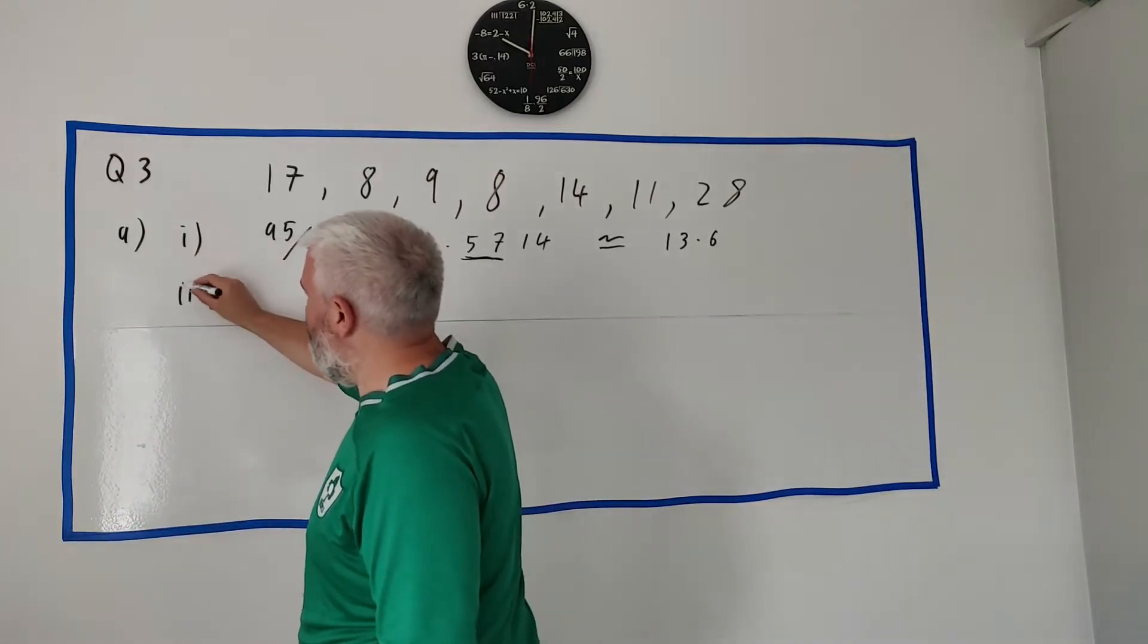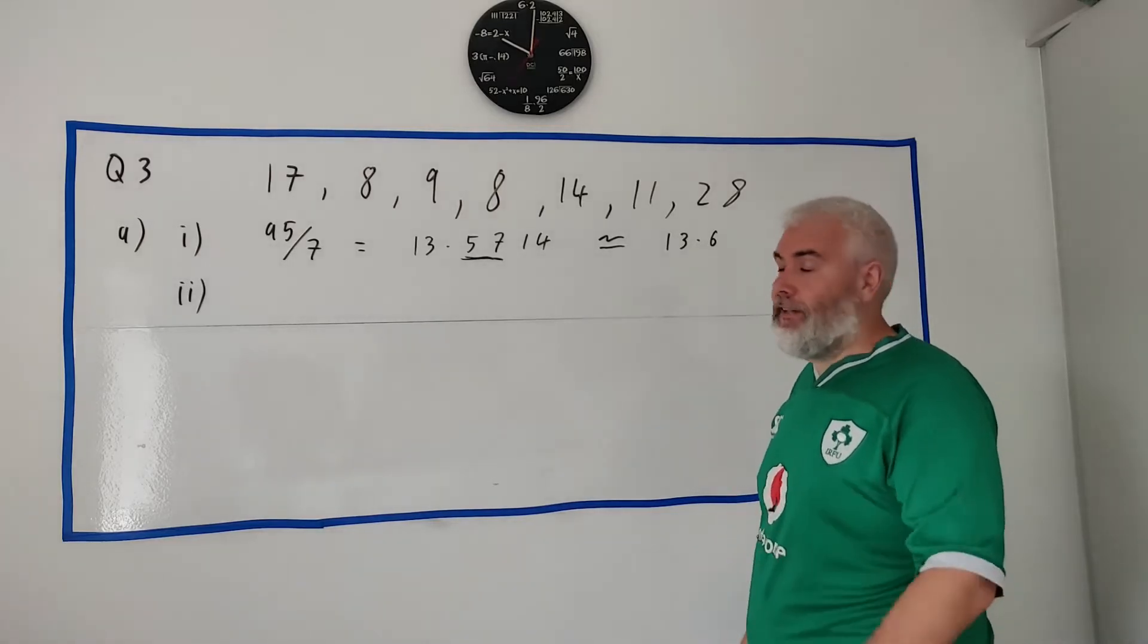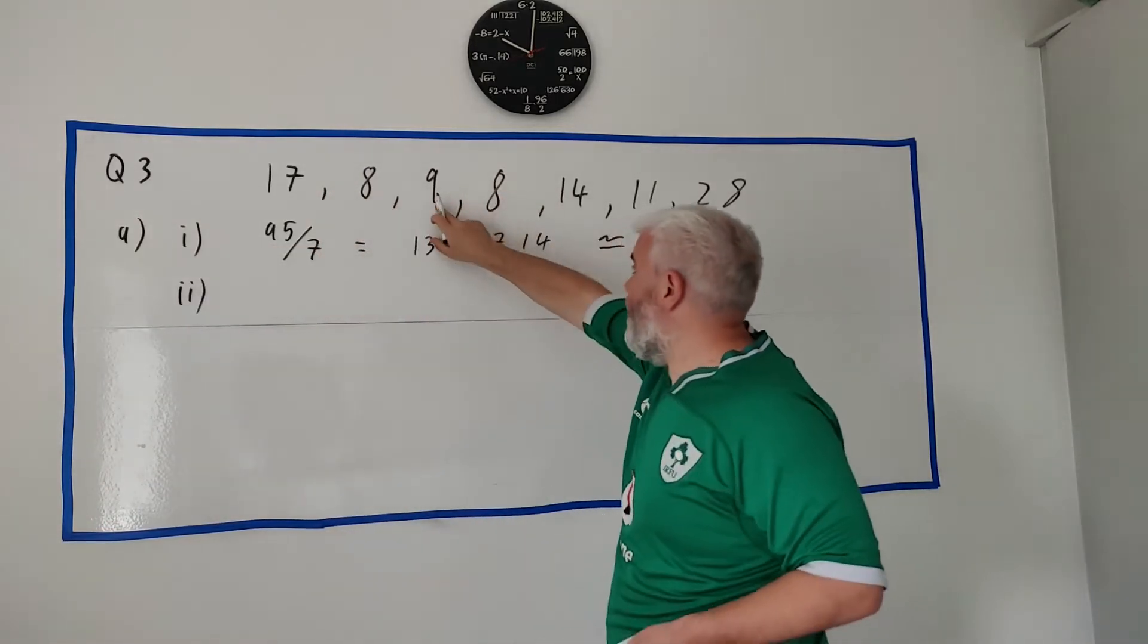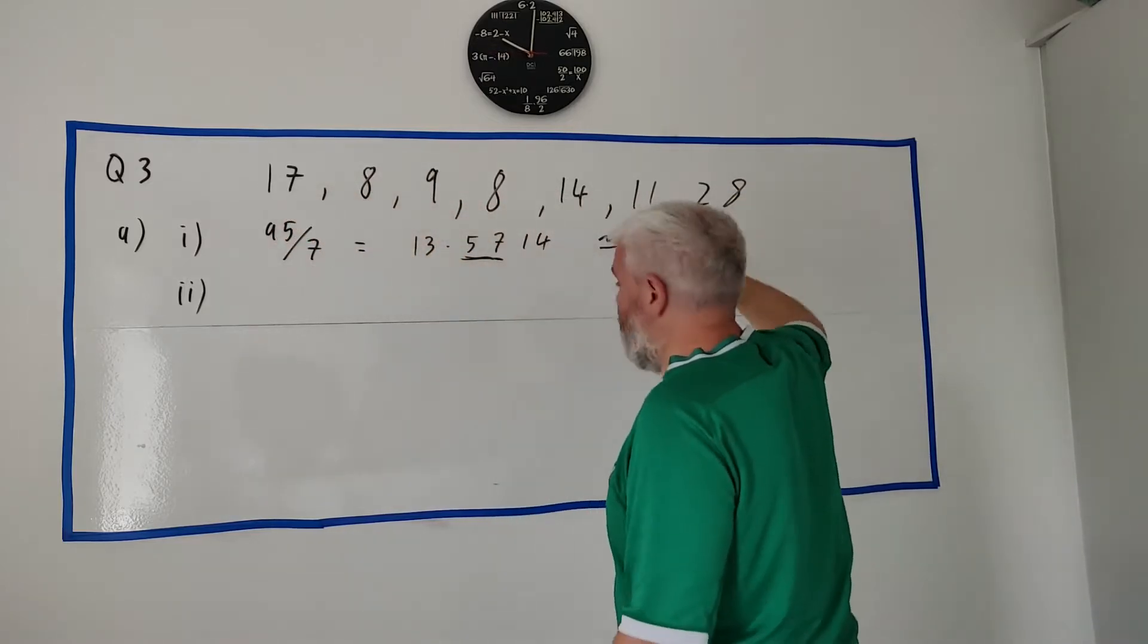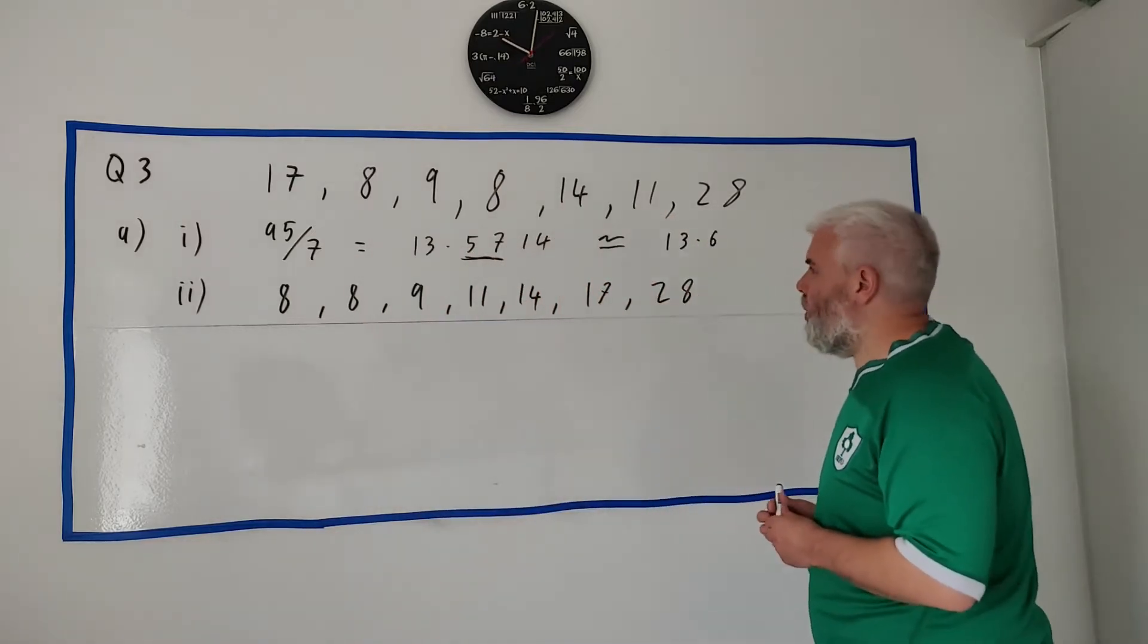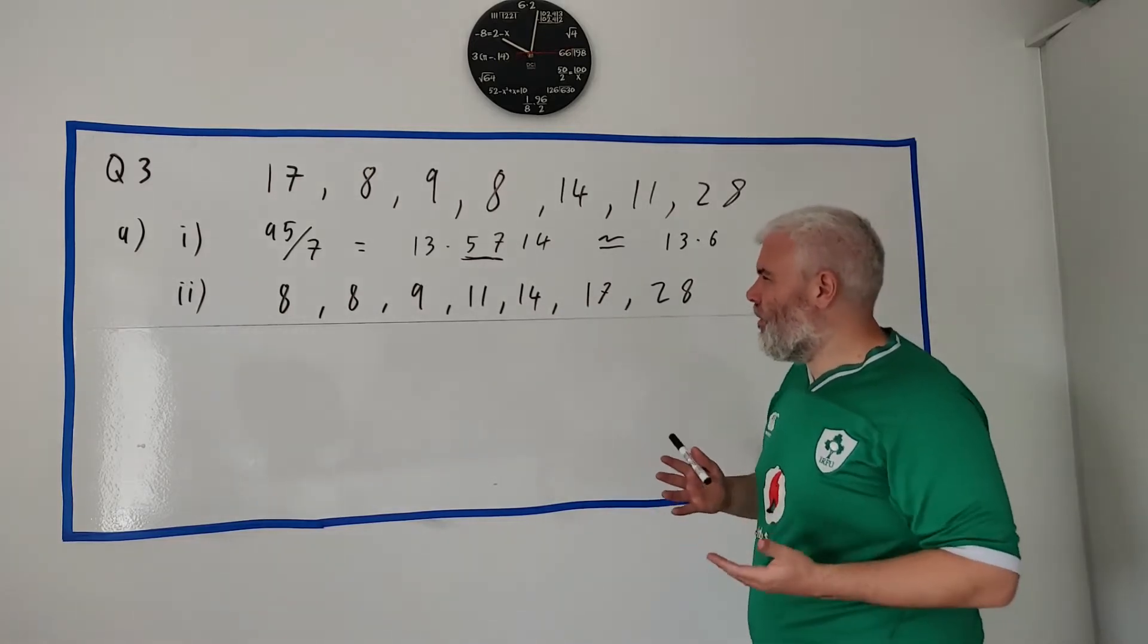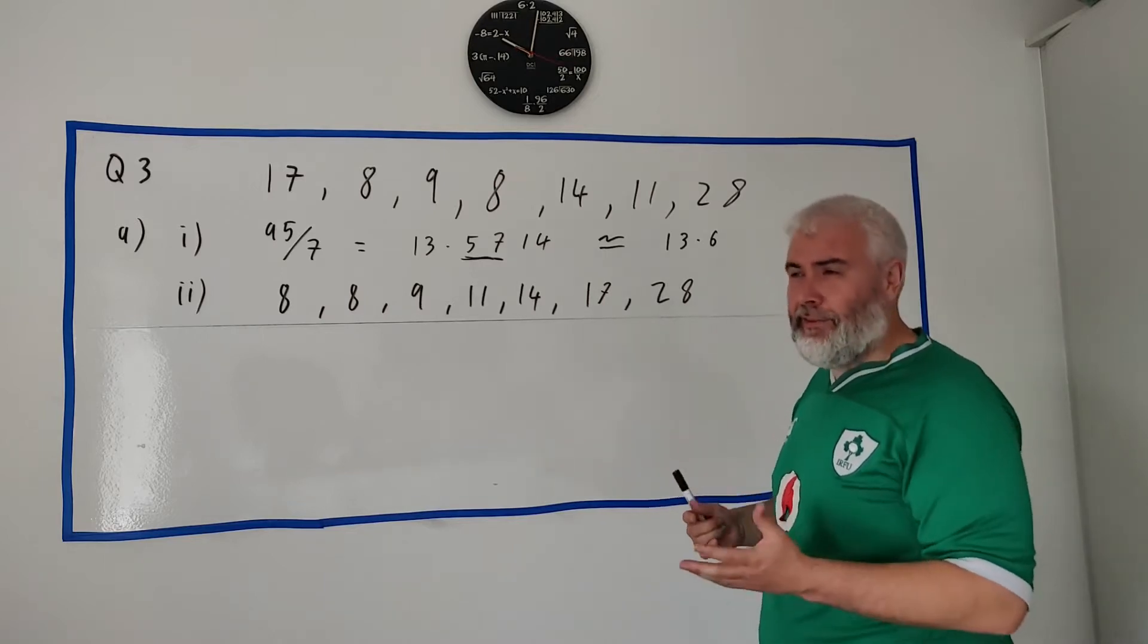Part two of this question, same numbers up there, they ask us to find the median. So to do that we need to put these in order: 8, 8, 9, 11, 14, 17, and 28. The median is simply the middle number. There's seven numbers here and one way you can do is divide seven by two to get the middle - that's three and a half.